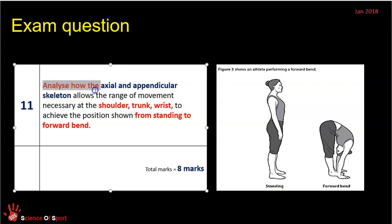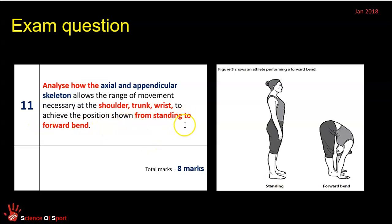The question specifically asks you to analyse the appendicular and axial skeleton, which reiterates that within your answer you'll have to refer to these two parts of the skeleton. You must refer back to what the question wants you to talk about — it's telling you to analyse whatever movement it wants in relation to the axial and the appendicular skeleton. So you must know what these two sections of the skeleton are comprised of. The question directs you towards three joints or three body areas: the shoulder, trunk, and wrist. You have to account for all three in your answer in order to head towards full marks — if you only talk about one or two, you're going to be missing some marks. The question always directs you towards a specific position or movement, and in this example it said from standing to forward bend. There's always an image to help you understand what it's asking you to analyse.